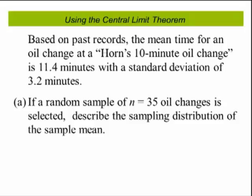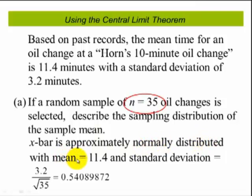Let's do an example. Based upon past records, the mean time for an oil change at Horn's 10-minute oil change is 11.4 minutes with a standard deviation of 3.2 minutes. If a random sample of n equals 35 changes is selected, describe the sampling distribution of the sample mean. Since our sample size is 30 or more, no matter what shape the original population has, the distribution of the sample means will be approximately normal. Its mean equals the population mean of 11.4, and the standard deviation is 3.2 divided by the square root of 35 — this is called the standard error.